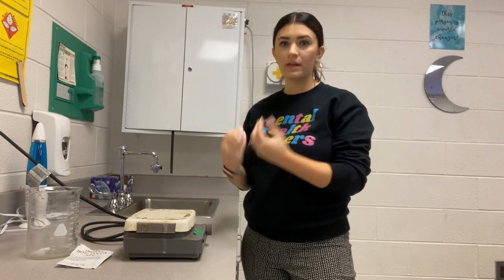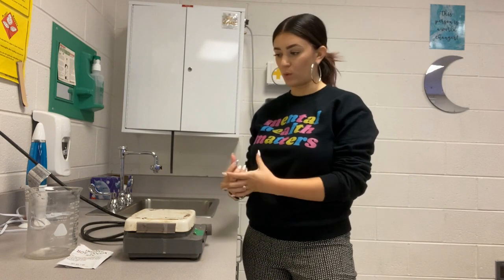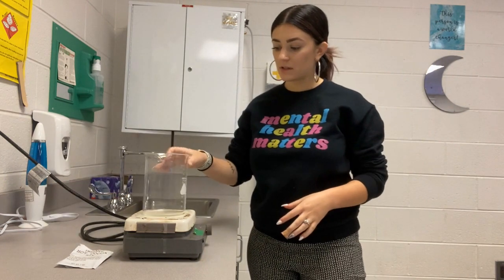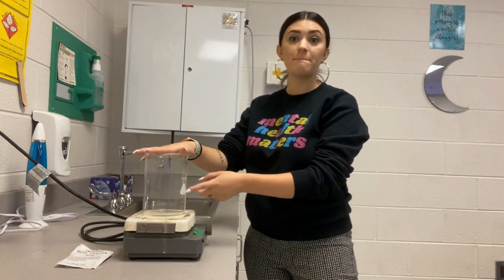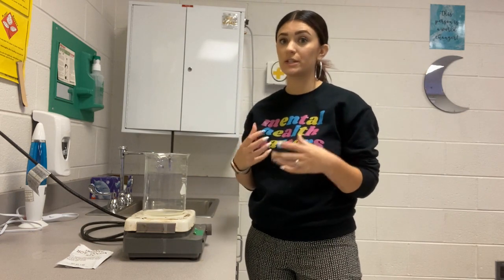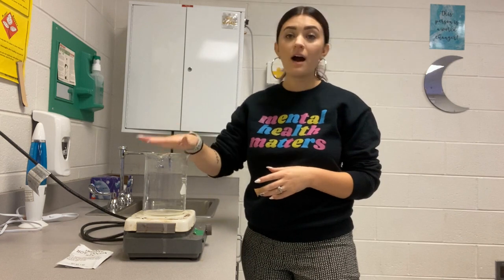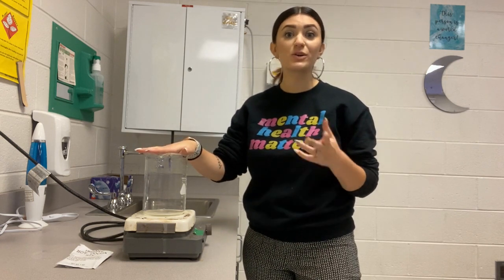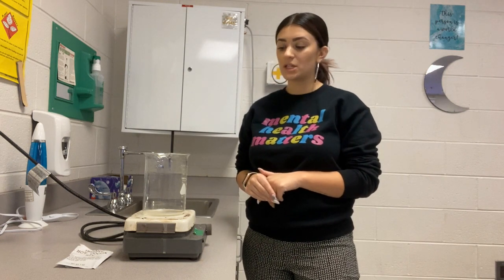I hope you saw that the hot plate represented the core — the heat from the inner and the outer core. The milk represented the mantle, the asthenosphere, specifically where convection currents are occurring. And the hot cocoa mix represented the crust or the lithosphere. Now I want you to construct an explanation on why this happened. Why did the hot cocoa mix move the way that it did? What caused it to move that way?